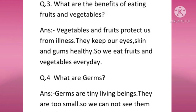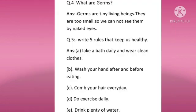Question number four: What are germs? Answer: Germs are tiny living things. They are too small, so we cannot see them with the naked eye. Question number five: What are five rules that keep us healthy? First, take a bath daily and wear clean clothes.